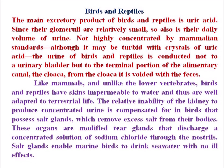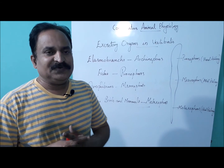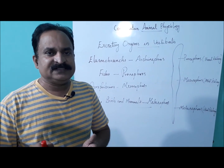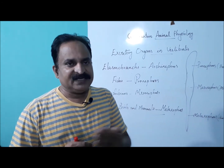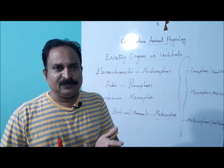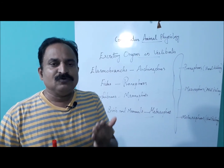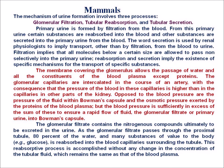In mammals, the kidney is metanephric — an advanced form of kidney which filters the urea formed inside the body. Some amount of uric acid, allantoin, and creatinine can also be excreted. The physiology of the mammalian kidney involves three processes: glomerular filtration, tubular reabsorption, and tubular secretion. Primary urine is formed by filtration from the blood. From this primary urine, certain substances are reabsorbed into the blood and other substances are secreted into the primary urine from the blood. The word secretion implies transport, other than by filtration, from the blood to urine. Filtration implies that all molecules below a certain size are allowed to pass non-selectively into the primary urine. Reabsorption and secretion imply the existence of specific mechanisms for the transport of specific substances.